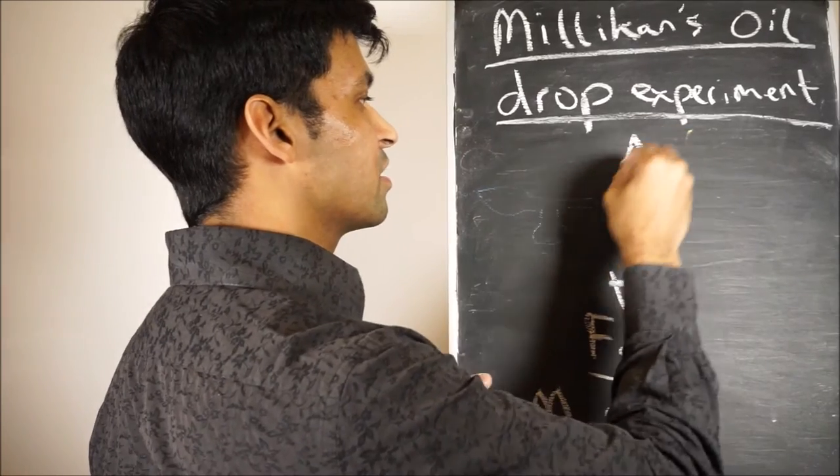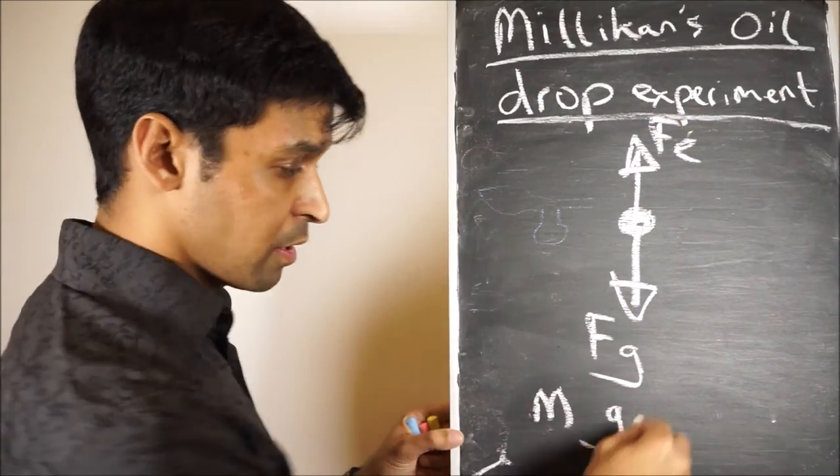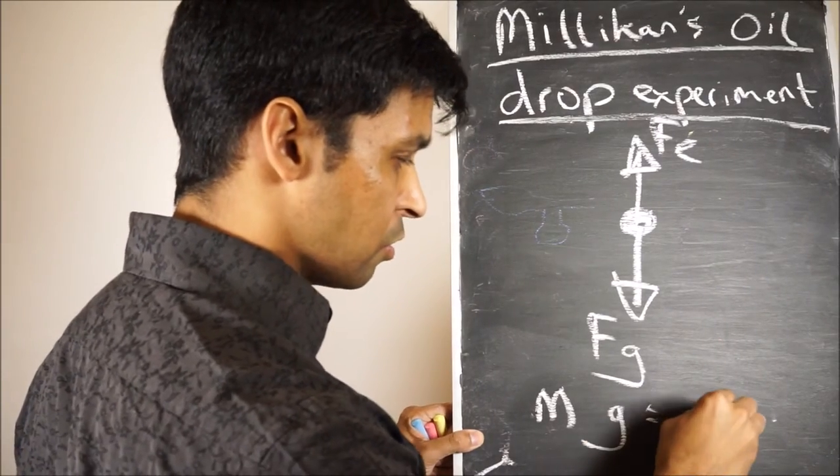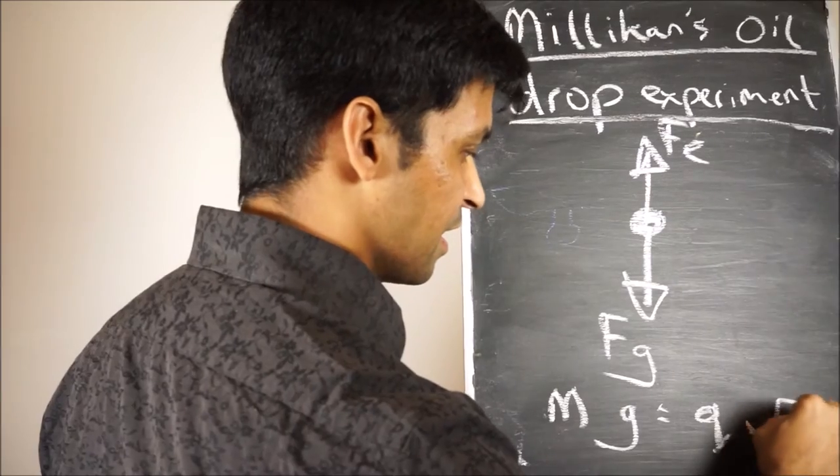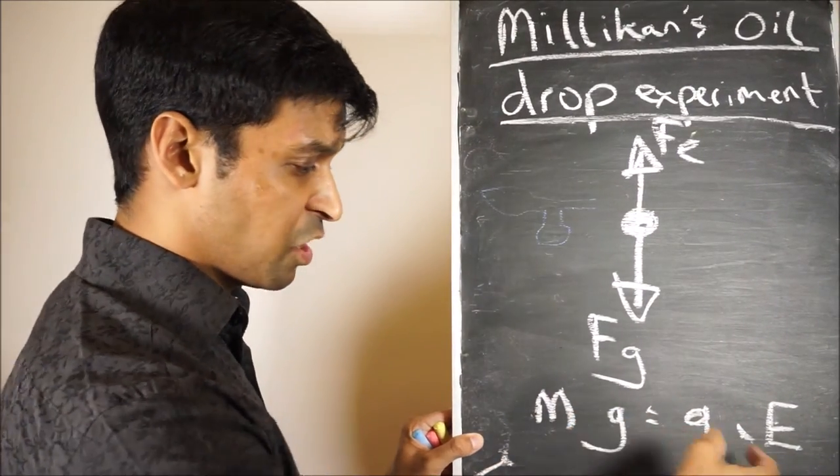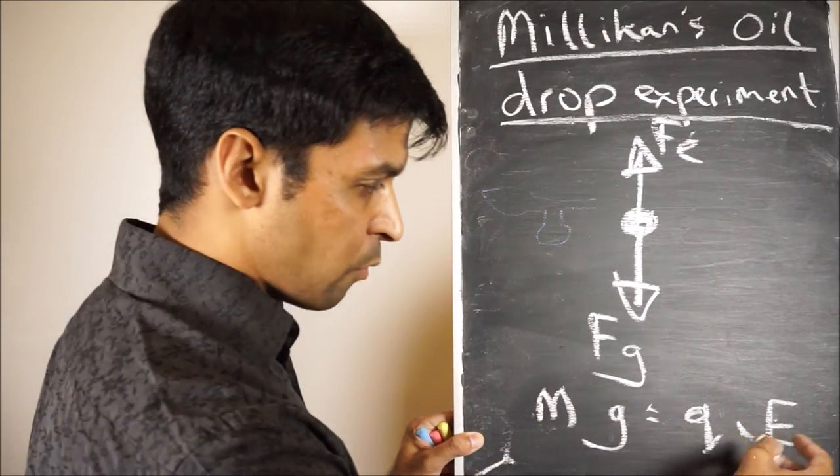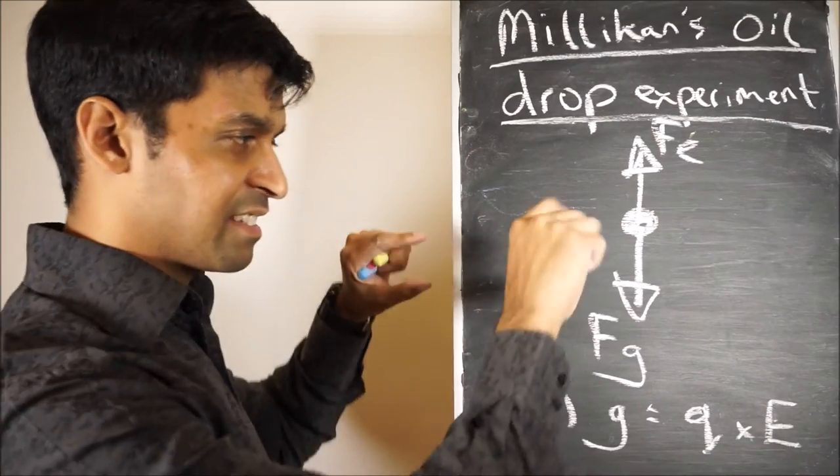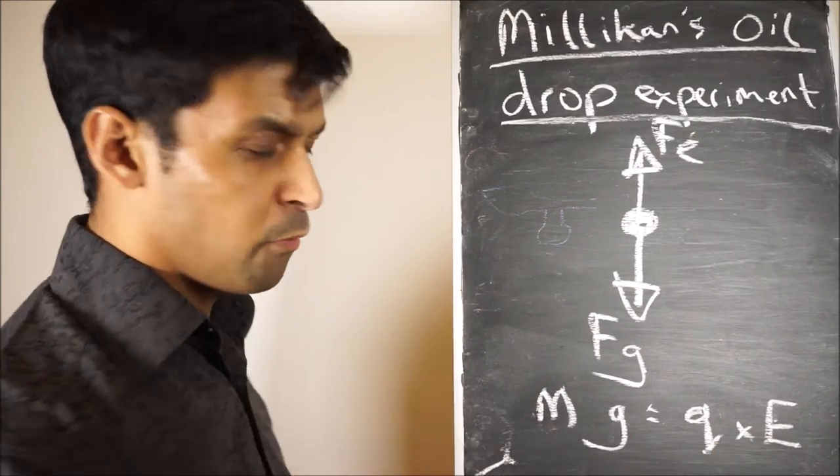And it's equal to Fe, the electric force, which is worked out by Q, not G, Q, times the applied electric field strength. So Mg equals QE. Now we know that because we can calculate it. This is a constant that we know because that's the one that they were tweaking. So you rearrange that and you solve for Q.